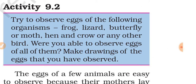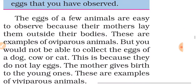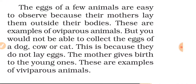The following activity will help you understand and differentiate between oviparous and viviparous animals. Try to observe eggs of the following organisms if possible: frog, lizard, butterfly or moth, hen, and crow or any other bird. Were you able to observe eggs of all of them? Make drawings of the eggs you observed. The eggs of a few animals are easy to observe because their mothers lay them outside their bodies — these are oviparous animals. But you would not be able to collect the eggs of a dog, cow, or cat, because they do not lay eggs.